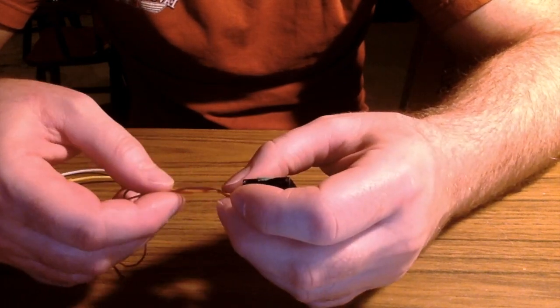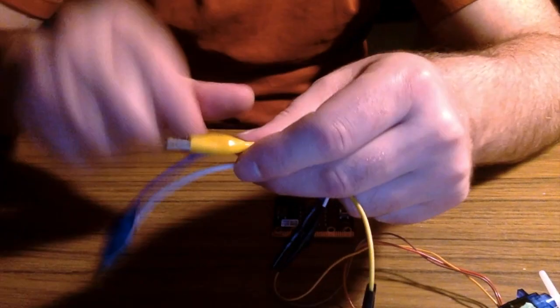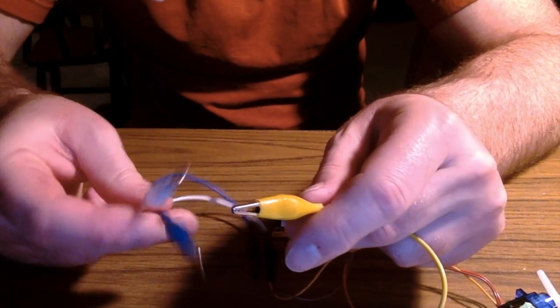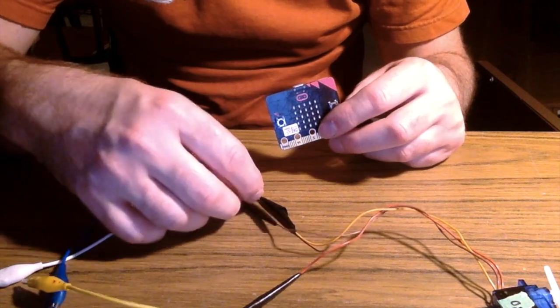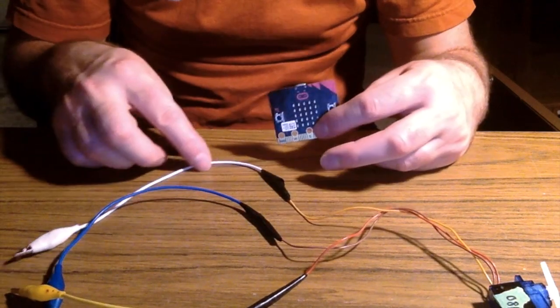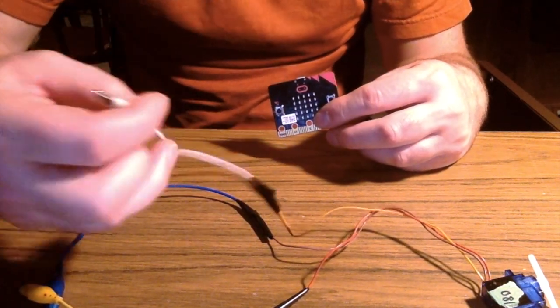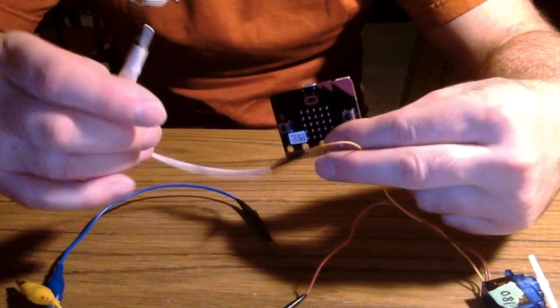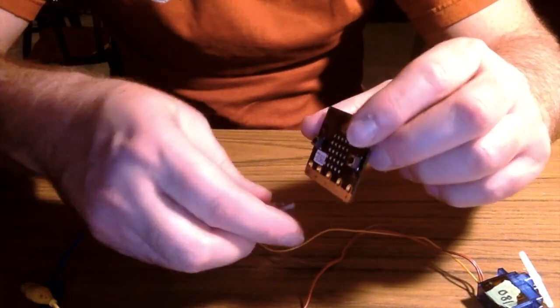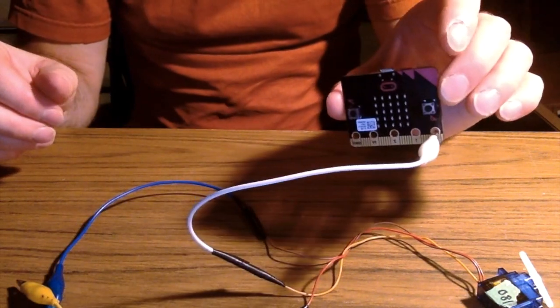You just gotta make sure you pay attention because I didn't use the same colors - just pay attention to what color is coming from the servo and then what the alligator clip color is. This orange wire turns into white on the alligator clip.